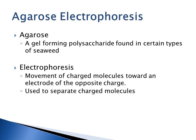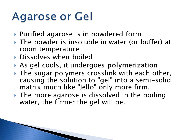Agarose electrophoresis is probably one of the more common and widely used visualization methods to see your nucleic acids. Agarose is a polysaccharide found in certain types of seaweed, and it comes in a powder form. Electrophoresis is the movement of charged molecules toward an electrode of the opposite charge, so your nucleic acids will always run from the negative charge toward a positive charge.